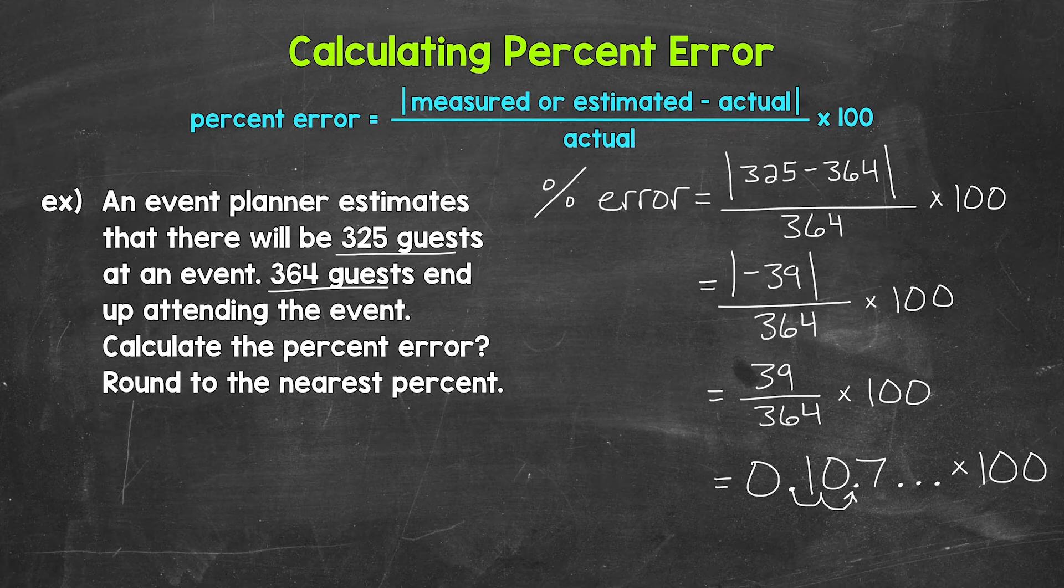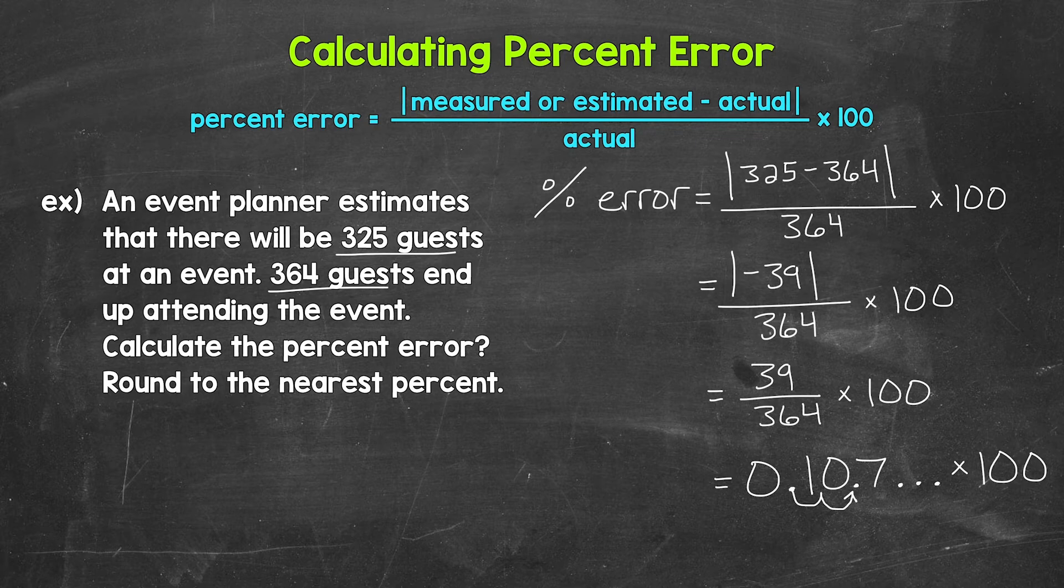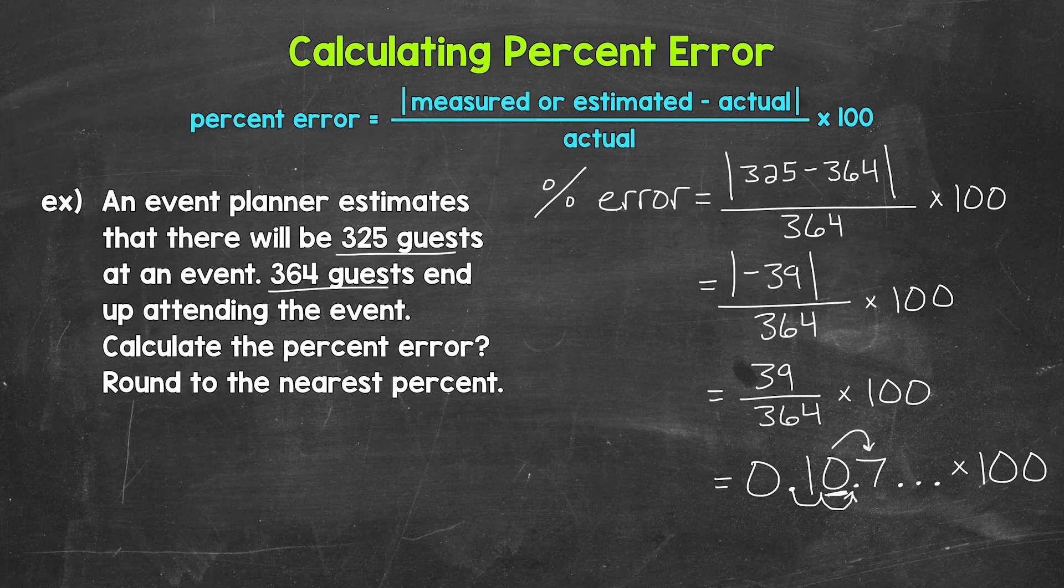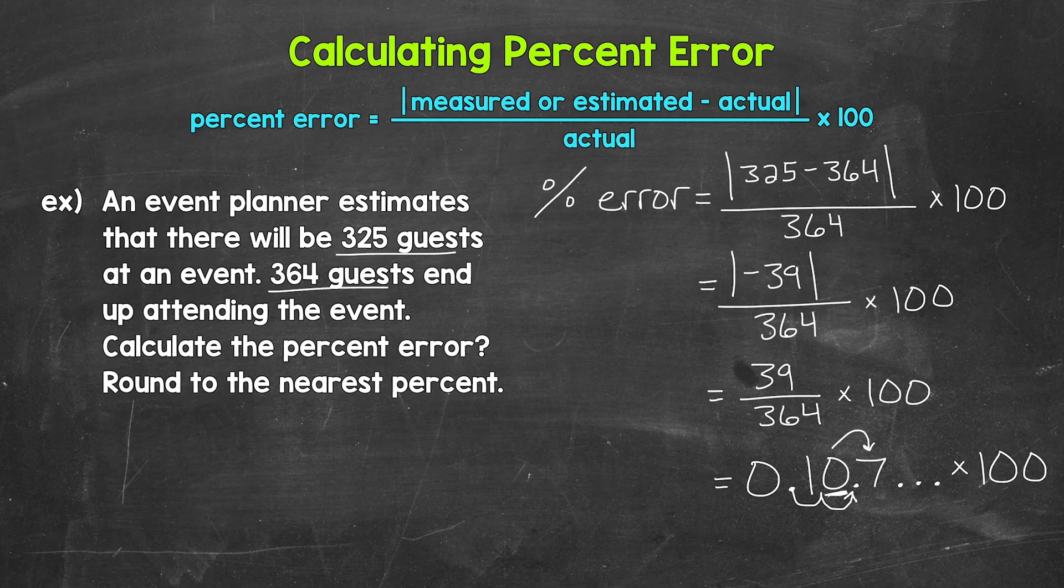So we're going to round to the nearest percent here. And when we round to the nearest percent, we round to the ones place. We have a 0 in the ones place with a 7 to the right in the tenths. So this rounds to 11%.